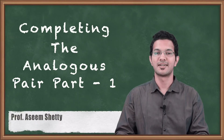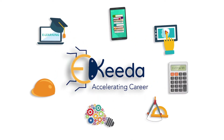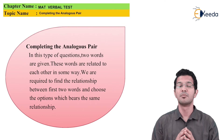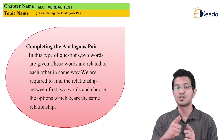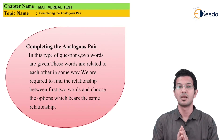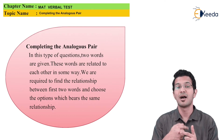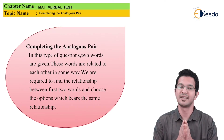Hello friends, let us understand what is completing the analogous pair. In analogous pair, we will be given two pairs of words. The first pair will consist of two words. We have to see the relation between those two words, and based on that relation, we have to find the second pair's relation. In the second pair, we will have one word and we will be asked to find out what is the second word.